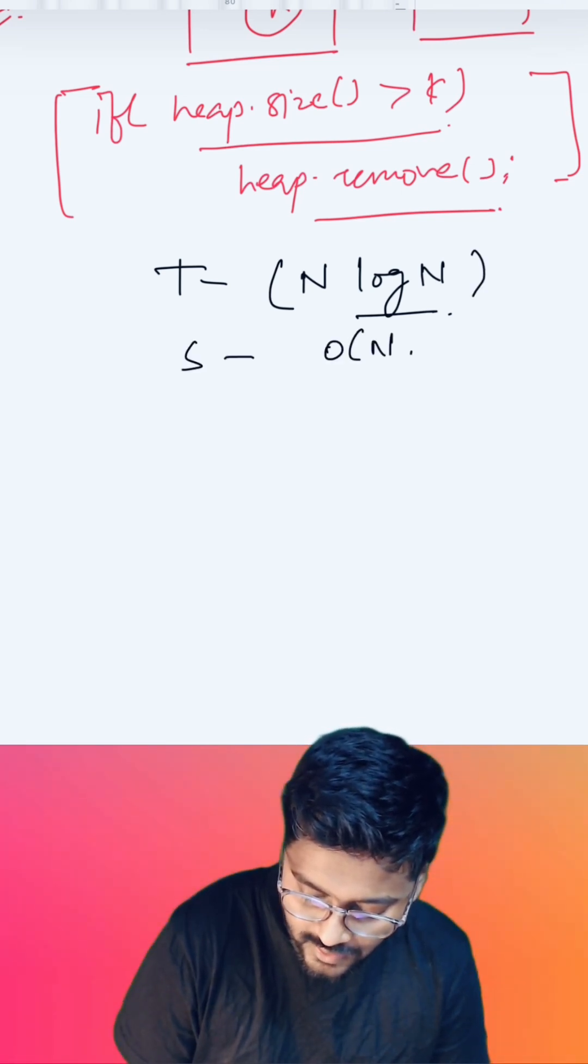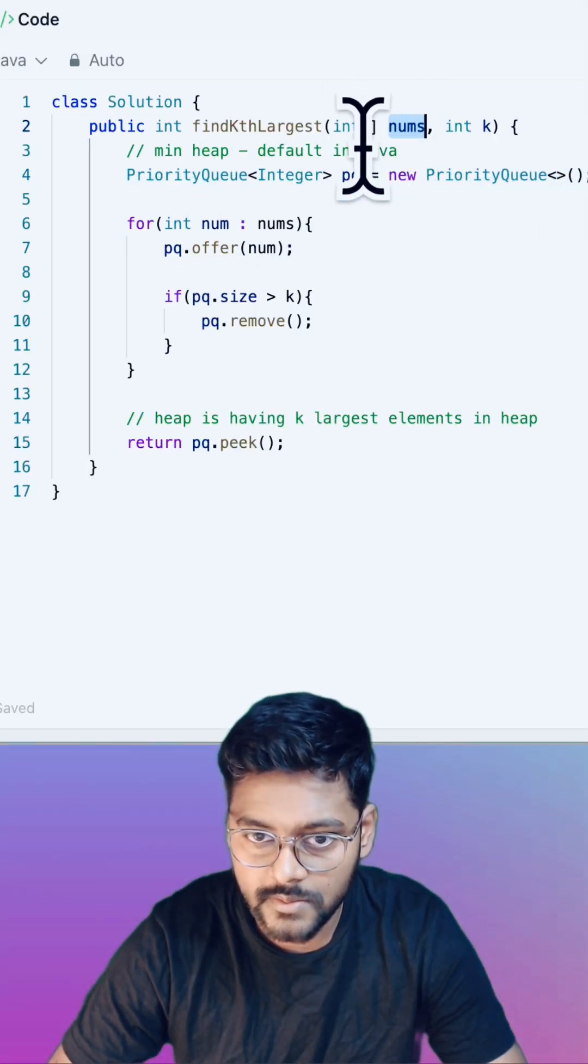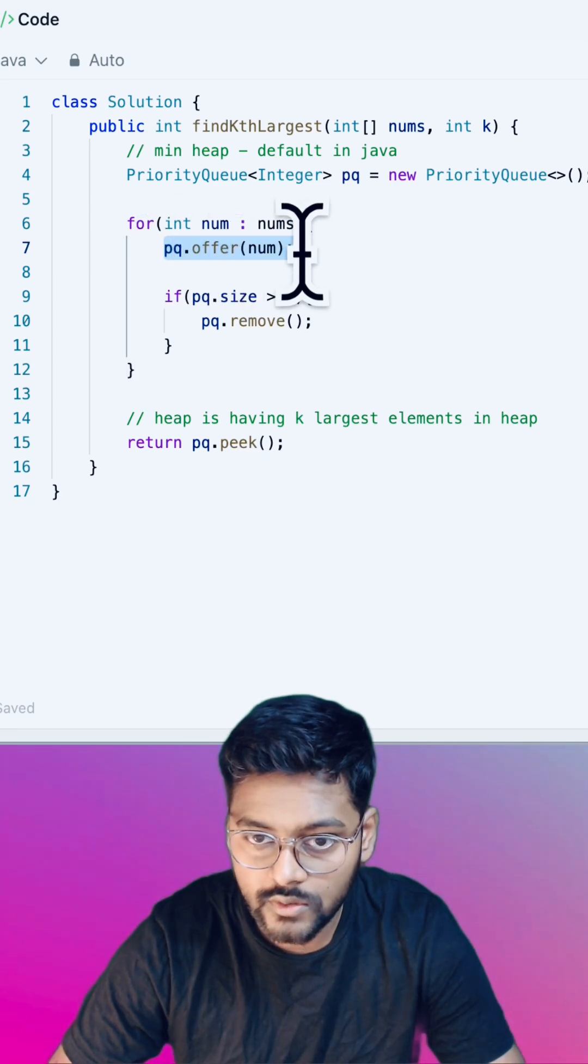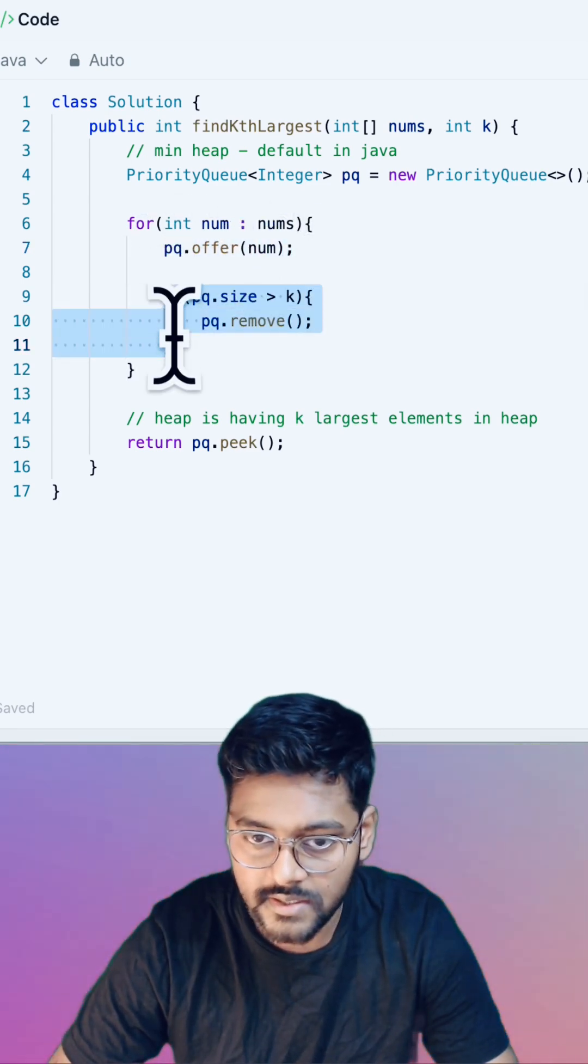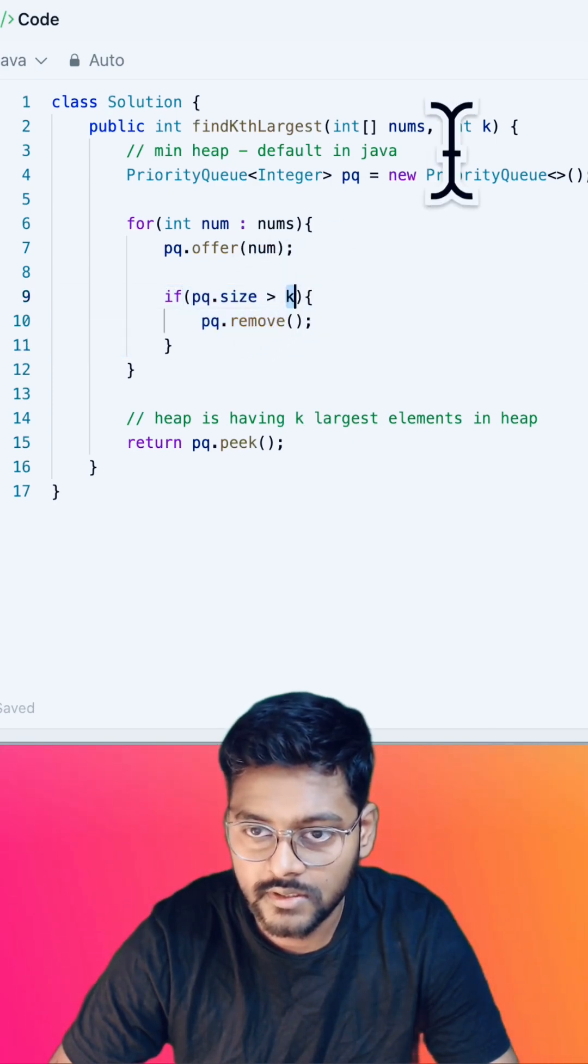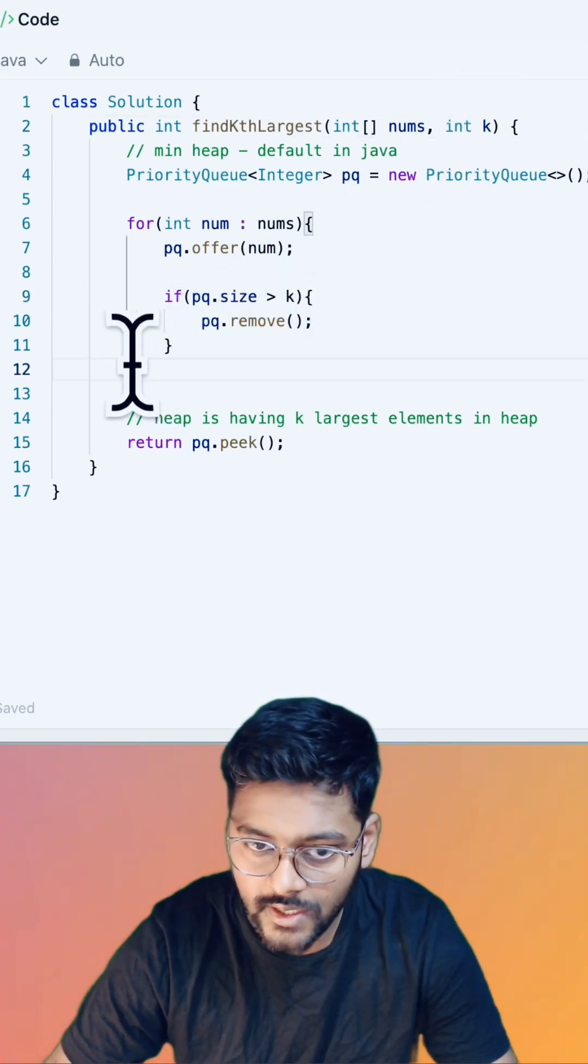And the space complexity in the worst case can go till order of n. First, I have taken a min heap data structure and I iterated over the nums array, adding all the elements in the min heap. And if at any moment the min heap size is crossing the k integer, then I am removing the element.